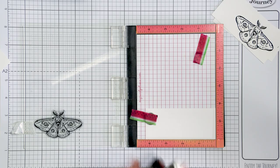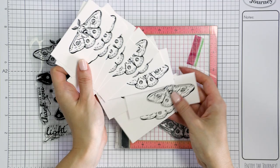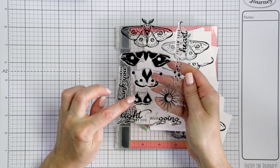With the outline stamped in black, I went ahead and picked several color combinations to color these images with. There are three layers so you'll need three colors of each.